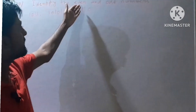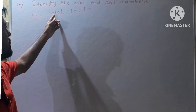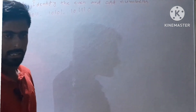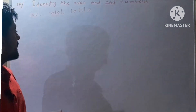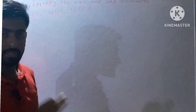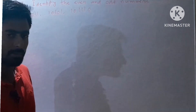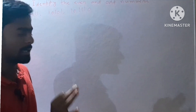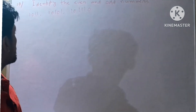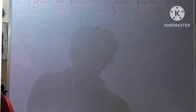Next question is question number 10: identify the even and odd numbers among 1011, 10101, 101110, and many such numbers. This is a short trick: if the unit place digit is 1, then the number is odd, and if the unit place digit is 0, then the number is even. So we identify each number accordingly.